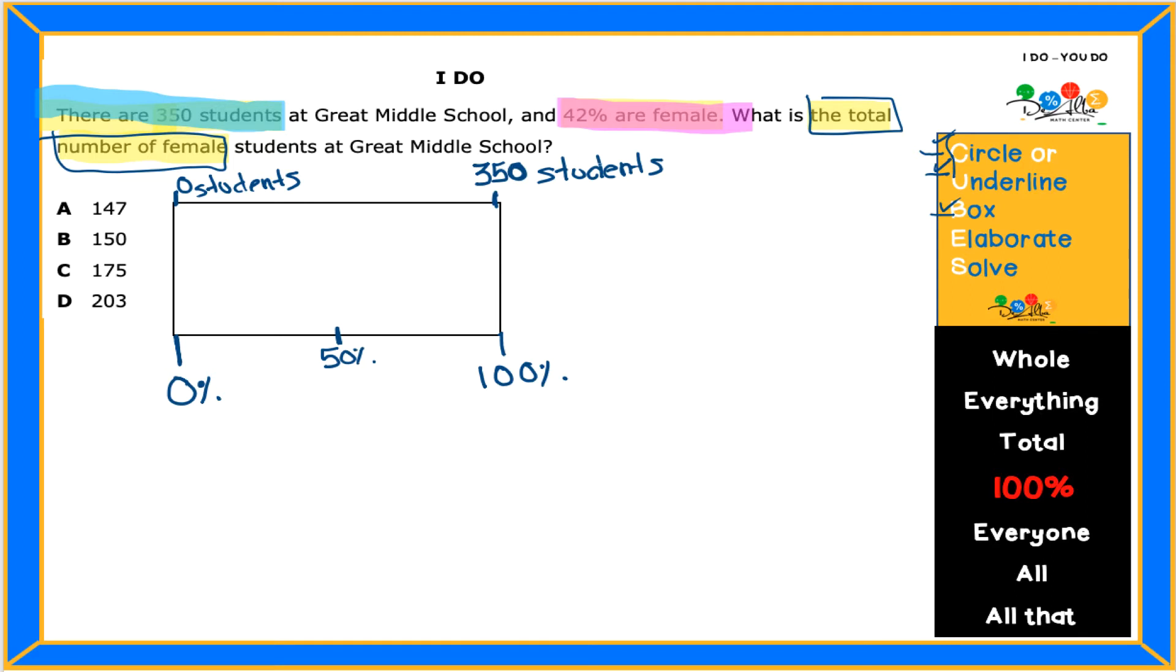I know that 350 students will be 100%. And then notice that here I highlighted the students in blue. Something I put it in blue. On the bottom, I know that 100% will be all the students. So I'm gonna differentiate between the numbers and the percent representation. So that's why I'm using two different colors.